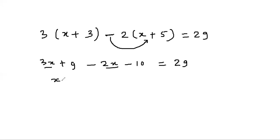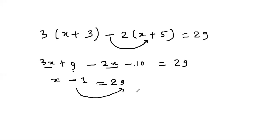So 3x - 2x gives x, and 9 - 10 gives -1, so x - 1 = 29. Shift -1 to the RHS; since it is a minus sign it becomes plus, so x = 29 + 1, giving x = 30.